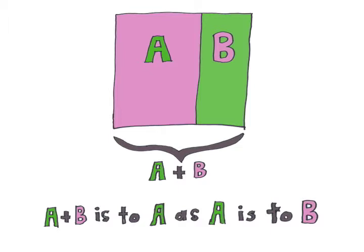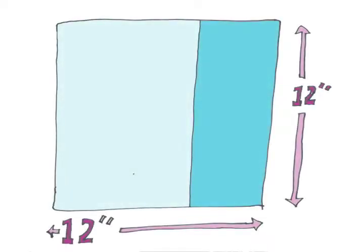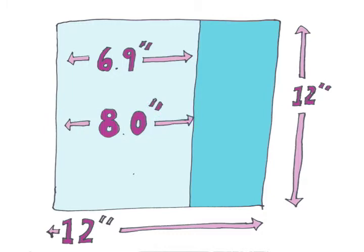And to think we all used to say we were never going to use algebra. Here's an oversimplified yet practical application for you to use in your scrapbooking. If you're creating a 12 by 12 layout, you will want to create one visual section that is between 6.9 inches and 8.0 inches in order for it to be considered a safe design element.